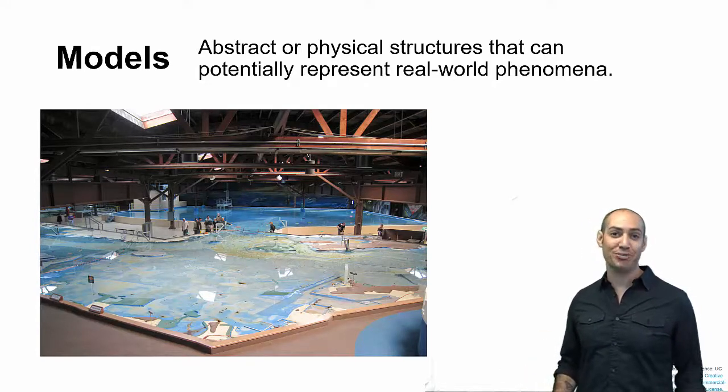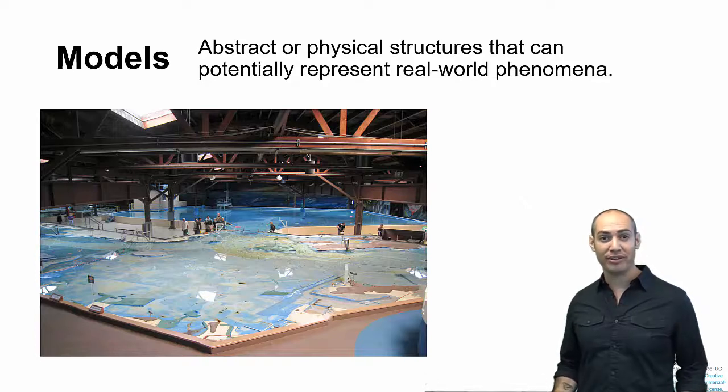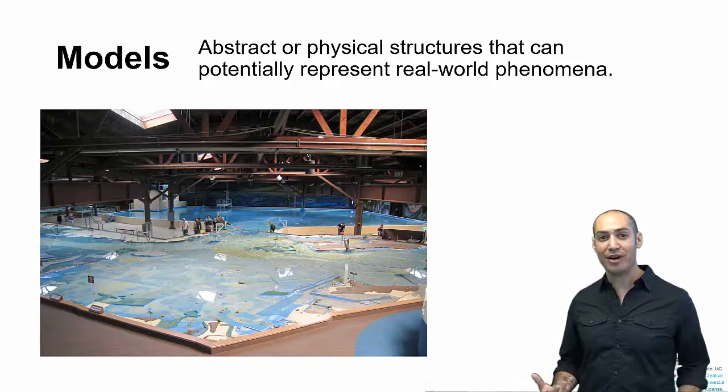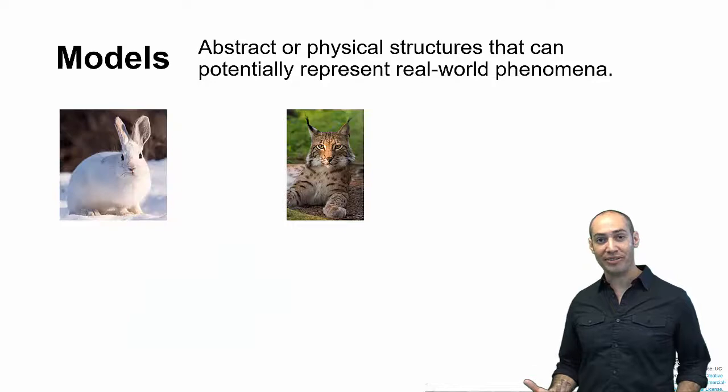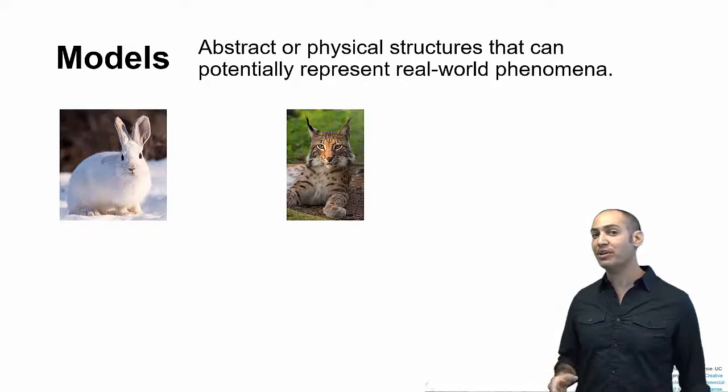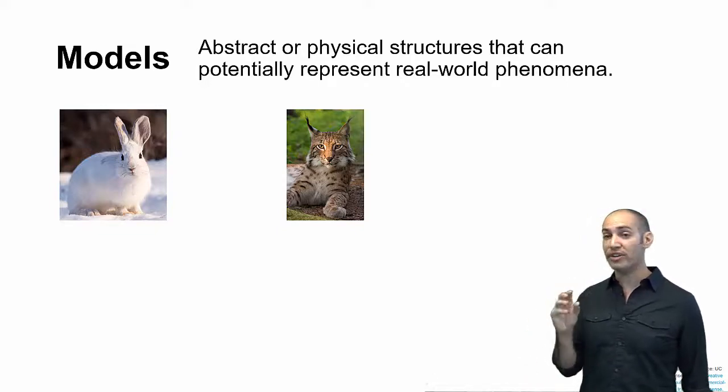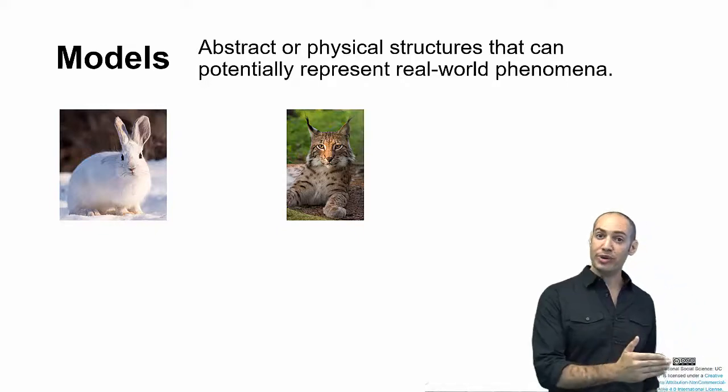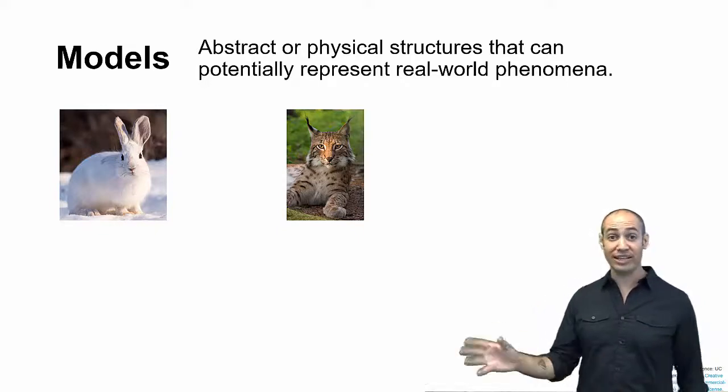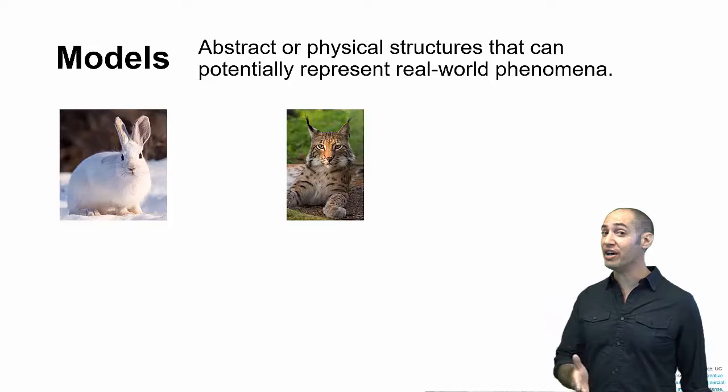We can use a physical model to help us understand complex systems. But we don't always have to build a physical model. What we can do is also write down what our assumptions are about the system as a set of mathematical or computational assumptions that we can then work through. For example, let's take an example from ecology. We're trying to understand the relationships between a snowshoe hare, a prey species, and a lynx, which is the kind of cat that feeds on the snowshoe hare.